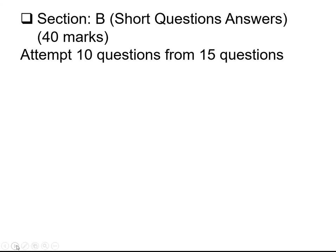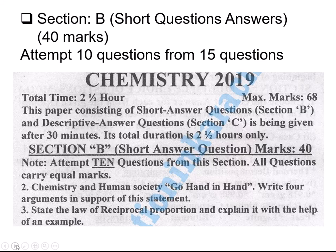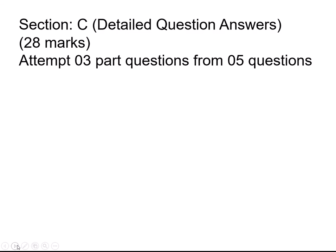Section B is short question answers. This section carries 40 marks. This section has 15 questions, each question is 4 marks, and you have to attempt 10 questions. You will have definitions, statements, reasons, chemical formulae, numericals, reactions, one-word reactions, half reactions, and wording equations.